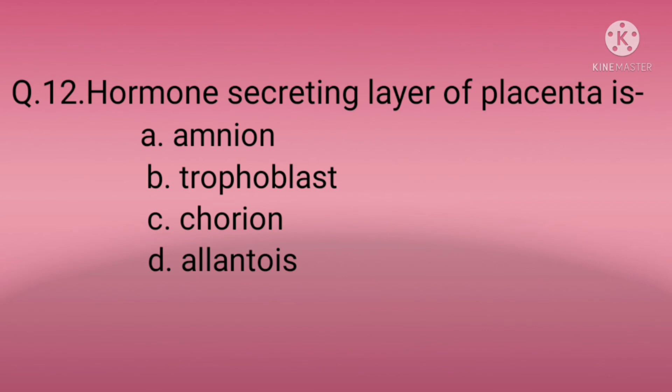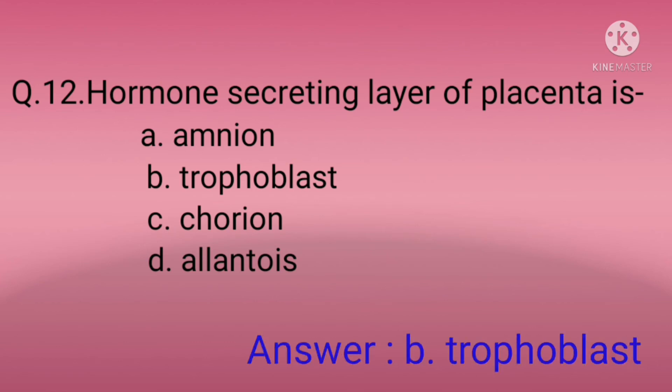Question twelve: The hormone secreting layer of the placenta is? Option A: Amnion, Option B: Trophoblast, Option C: Chorion, Option D: Allantois. The correct option is B — trophoblast.